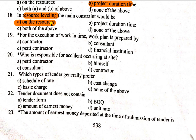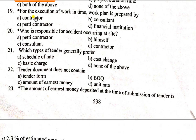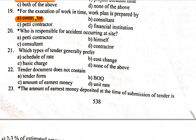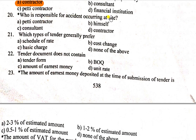In the 19th question: For the execution of work in time, the work plan is prepared by contractors. The work plan needs to be prepared by contractors. Who is responsible for the accidents occurring at the site? Of course, the contractor will be responsible for the accidents occurring at the site.